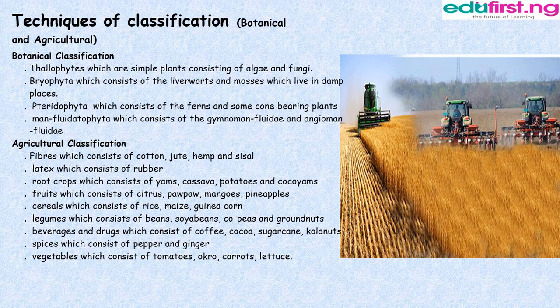Techniques of Classification — Botanical Classification. Thallophytes, which are simply plants consisting of algae and fungi. Bryophyta, which consists of the liverworts and mosses, which live in damp places. Pteridophyta, which consists of the ferns and some cone-bearing plants. Spermatophyta, which consists of the gymnosperms and angiosperms.